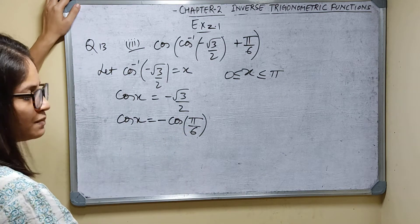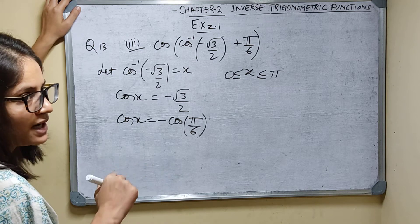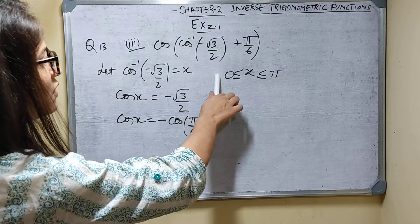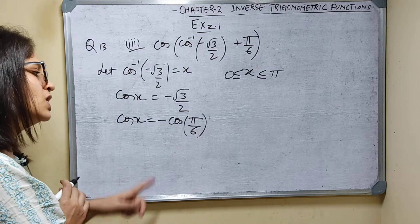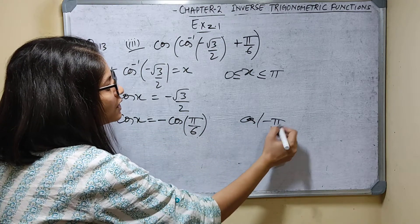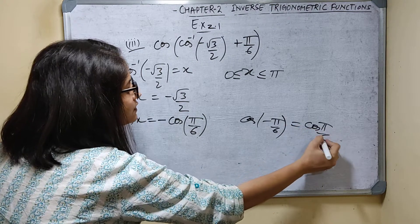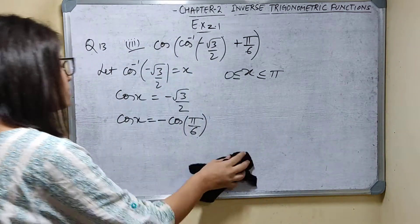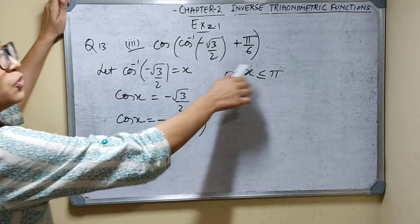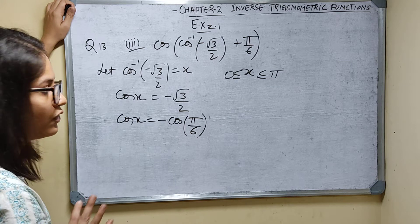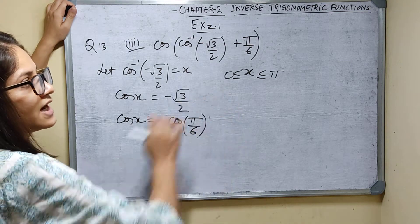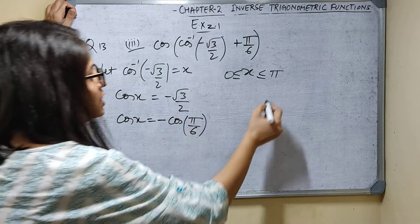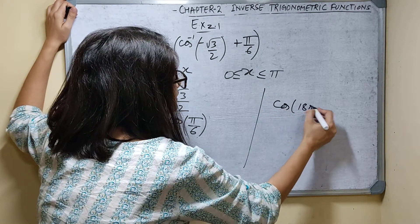I need the negative of cos pi by 6 with x between 0 to pi. Negative cos means second quadrant. I know cos(180 minus theta) equals minus cos theta. So minus cos pi by 6 equals cos(pi minus pi by 6) = cos of 5 pi by 6. Since 5 pi by 6 is 150 degrees, it lies in the second quadrant and between 0 to pi. So x equals 5 pi by 6.